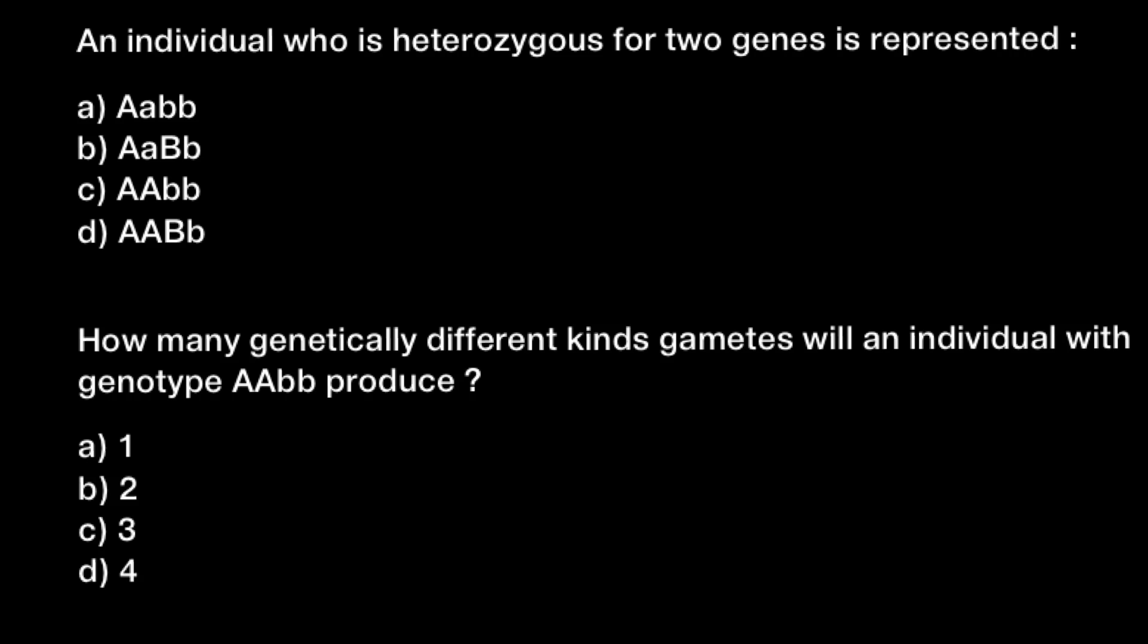So the first question is: an individual who is heterozygous for two genes is represented, and there are four genotypes to choose from. If you take a close look you would see we have two letters here, letter A and letter B in different combinations. So we have two genes, one gene A and another gene B, and in diploid organisms all genes have to be present in at least two copies.